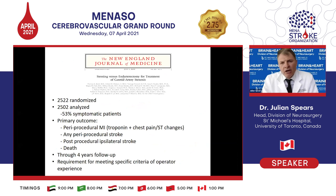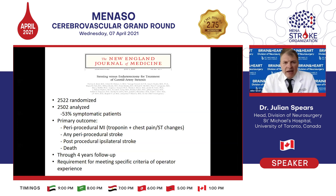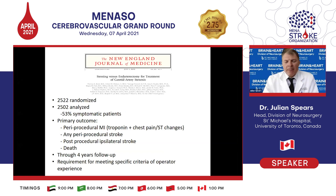In 2010, the multicenter CREST trial was published. Recruitment wasn't quite as robust as anticipated, so it became a trial of 53% symptomatic patients, with the balance being asymptomatic — considered a slight dilution of the overall intent. The trial studied periprocedural MI, periprocedural stroke, any stroke, and death with four-year follow-up, and carefully catalogued the influence of operator experience.